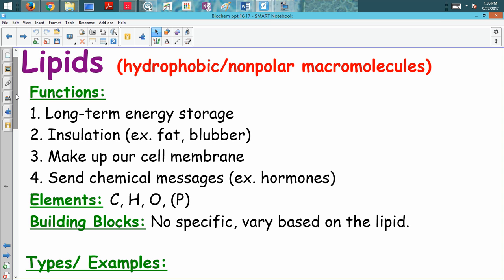Another function is insulation. For example, we have a layer of fat on our body that helps to keep us warm, provides cushioning. Blubber on a whale is another example. The third function is they make up our cell membranes, which we're going to look at more closely.